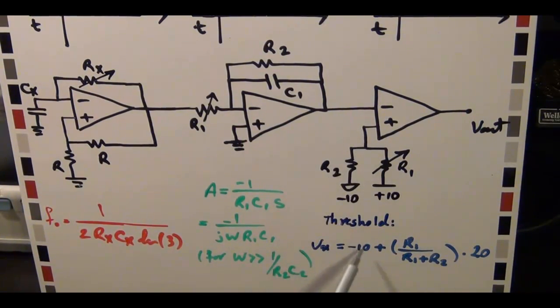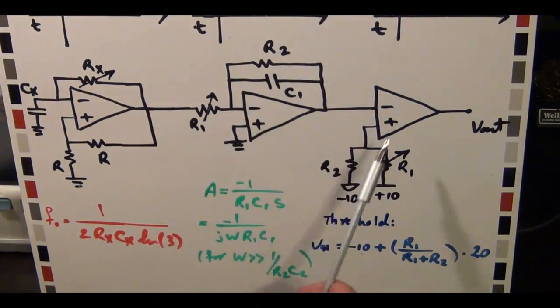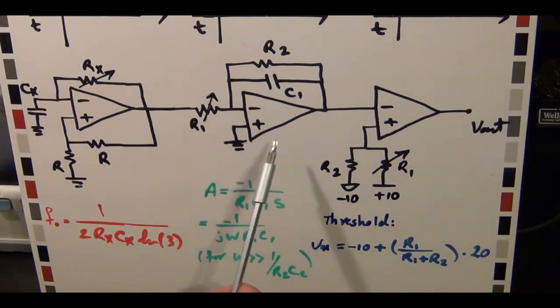Is minus 10 volts plus R1 divided by R1 plus R2, which is the resistor divider ratio times 20, which is the total potential difference between these two. So by using this equation, you can find out the exact threshold of the comparator.